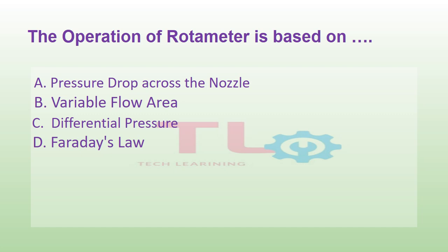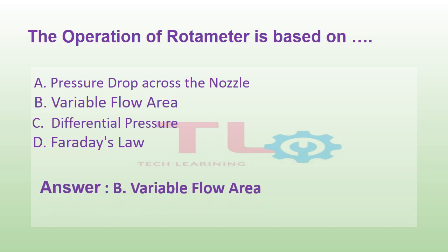The infrared pyrometer is based on: Option A: pressure drop across the nozzle. Option B: variable flow area. Option C: differential pressure. Or option D: Faraday's law. And the answer is option B, variable flow area.